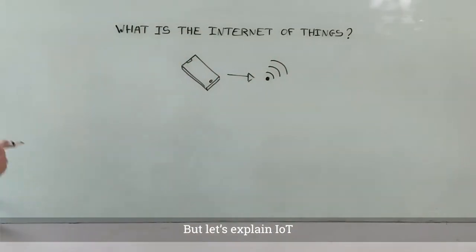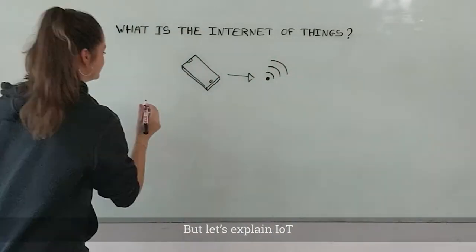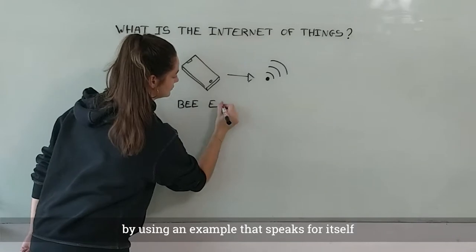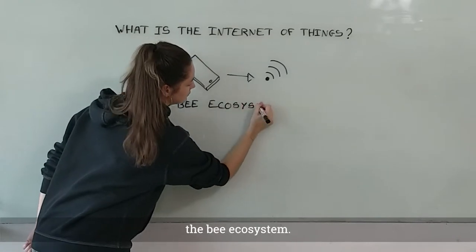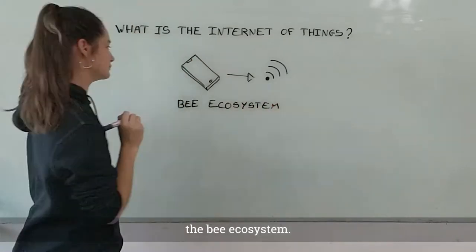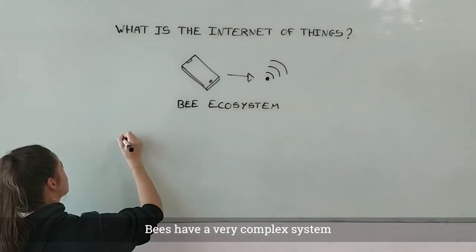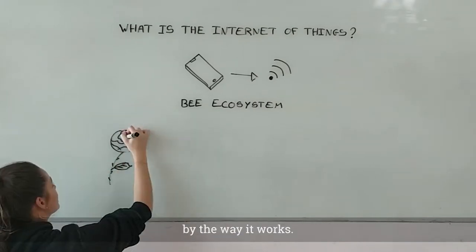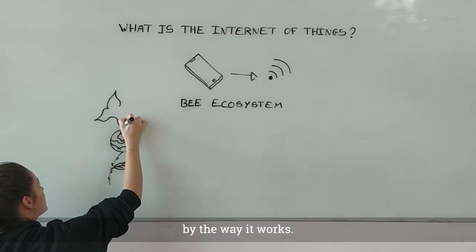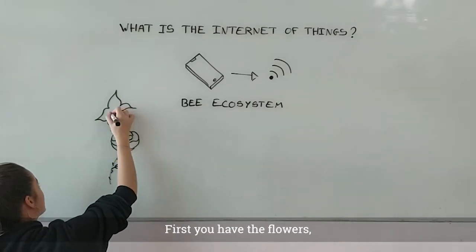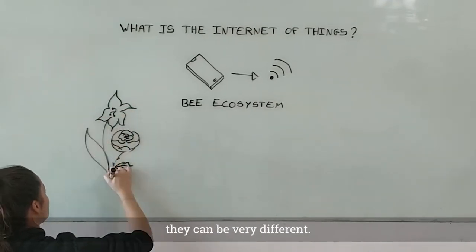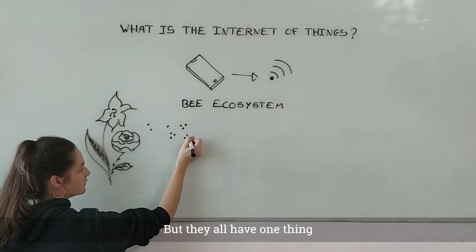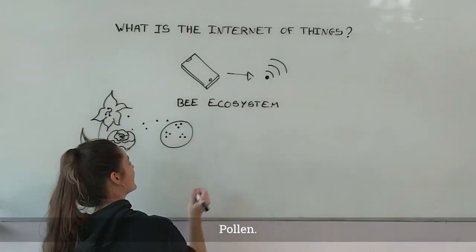Let's explain IoT by using an example that speaks for itself: the bee ecosystem. Bees have a very complex system, actually quite close to the Internet of Things by the way it works. First you have the flowers — they can be very different, but they all have one thing: pollen.